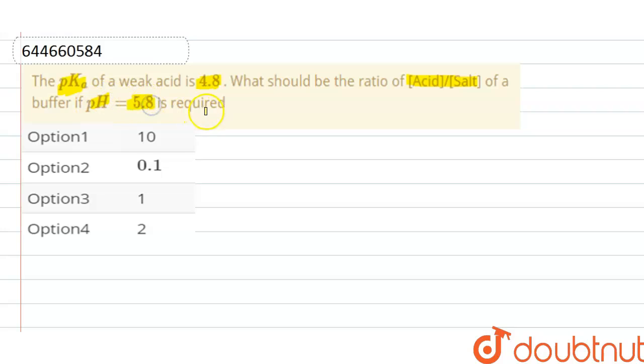First of all, the expression of pH for a buffer is: pH equals pKa plus log of salt divided by acid.